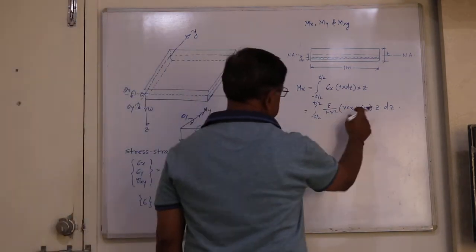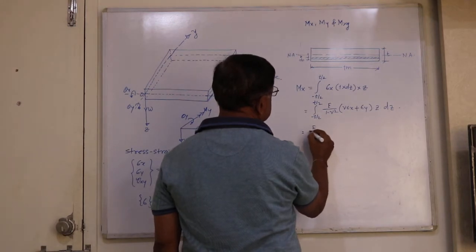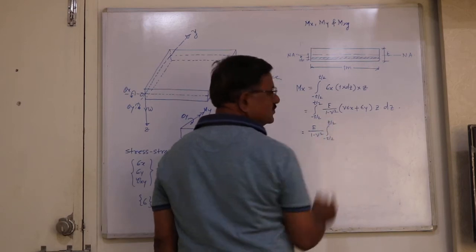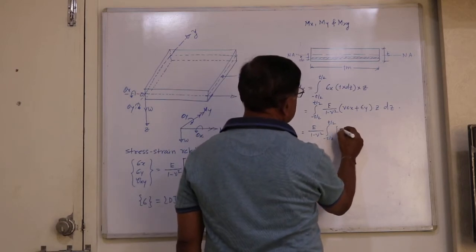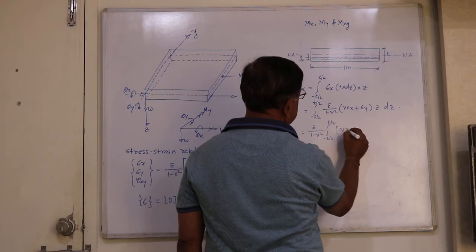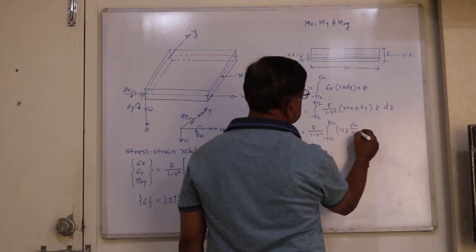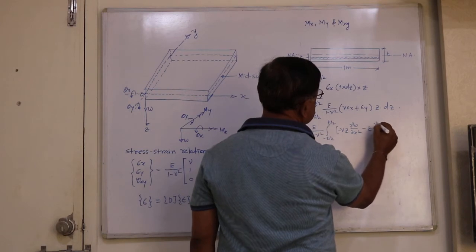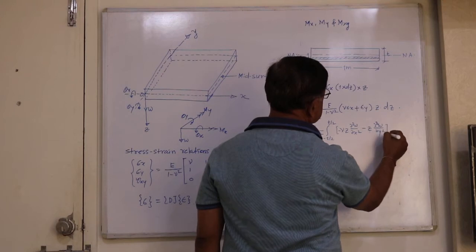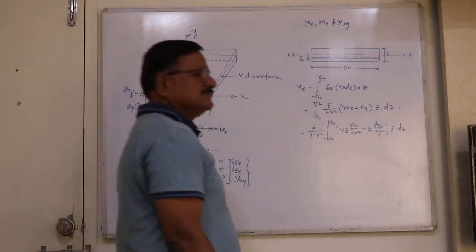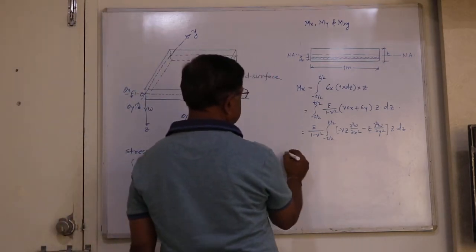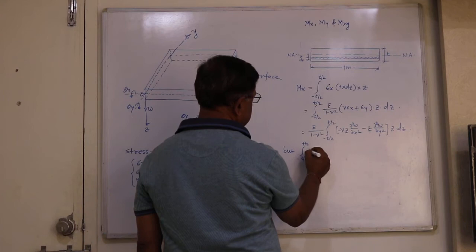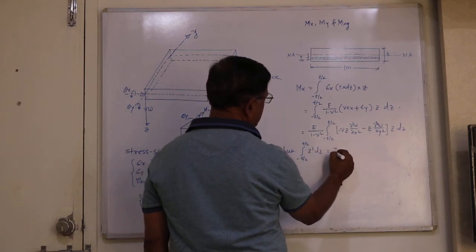Now substitute for epsilon X and epsilon Y. We can take E divided by (1 minus nu squared) outside the integral. The integration from minus T/2 to T/2 becomes: nu into minus Z times (∂²W/∂x²) minus Z into (∂²W/∂y²) times Z into DZ. We also know that the integration from minus T/2 to T/2 of Z squared DZ equals the moment of inertia.